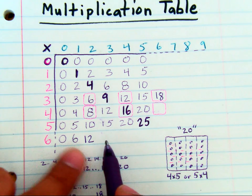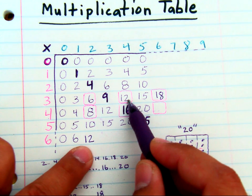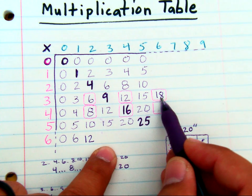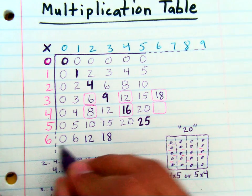So if you count by sixes: zero, six, twelve, what's the next six? Eighteen. So if you know your threes, you know your sixes.